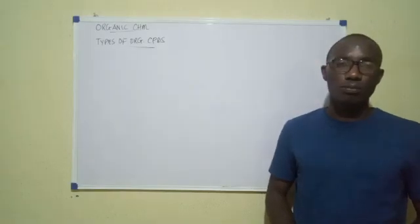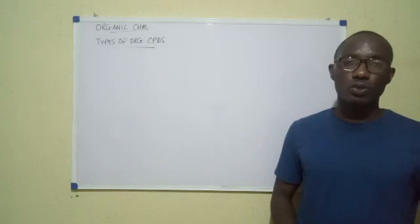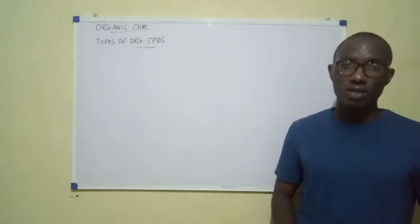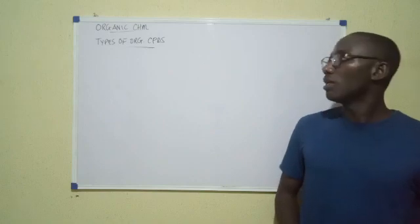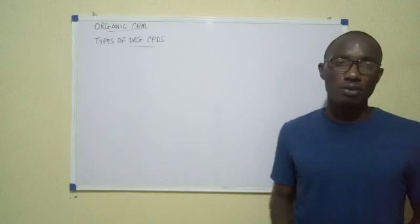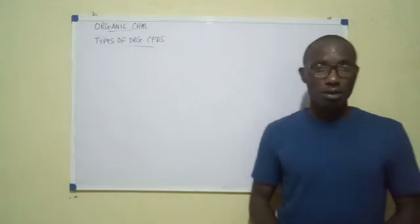Welcome to the second part of our organic chemistry study. In the first part we saw that carbon compounds are very many and exist in families called homologous series. Now these organic compounds are so many, let's see how they are classified, what groups they are divided into. So we're heading this types of organic compounds.